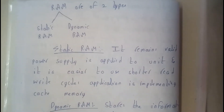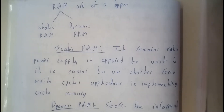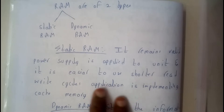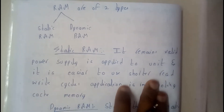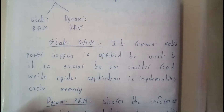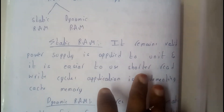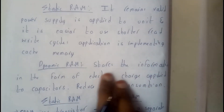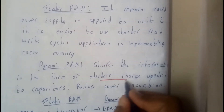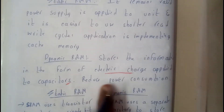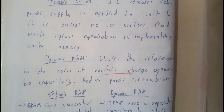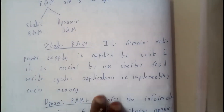Static RAM is a normal RAM which works very fast and efficiently, and it can do read and write operations. However, its construction is costly and complex — that's the main drawback. Dynamic RAM, on the other hand, stores information in the form of electrical charges applied to capacitors, which reduces power consumption and results in less circuit complexity compared to Static RAM.